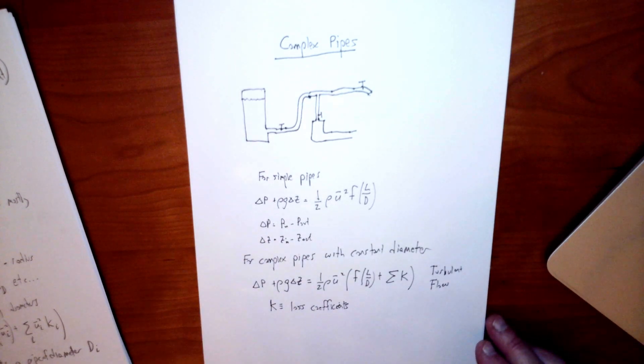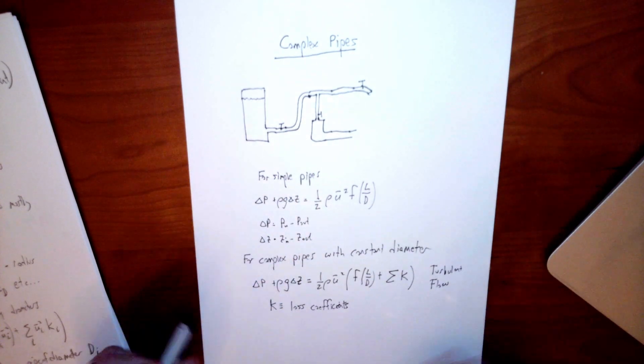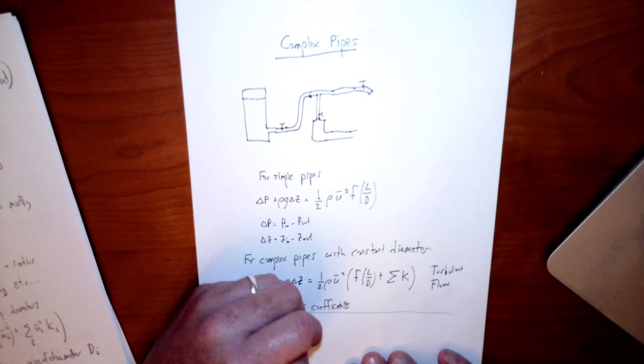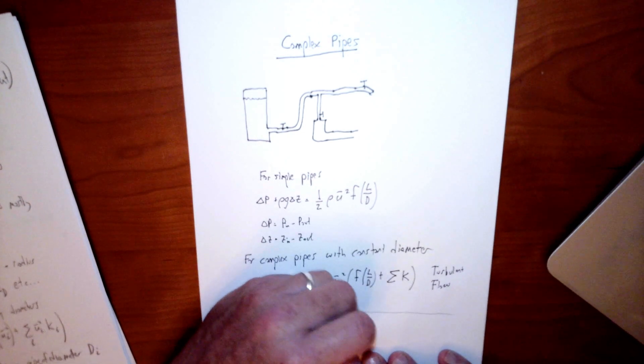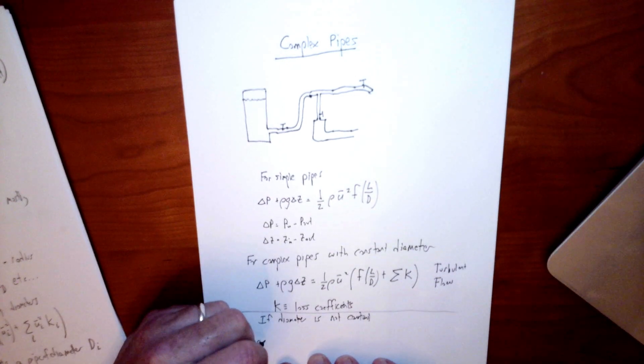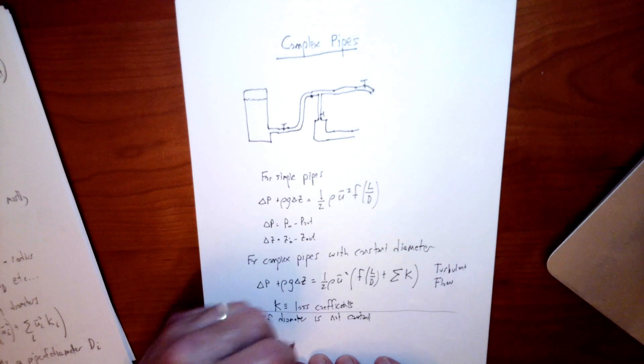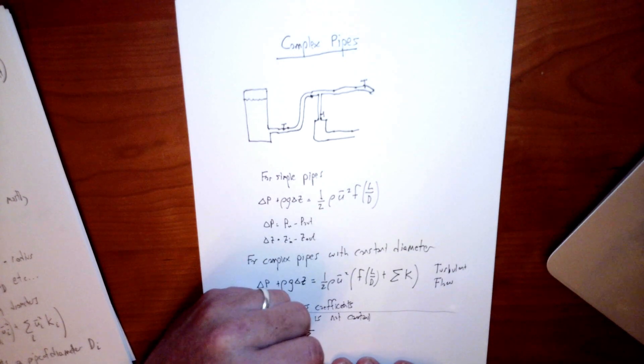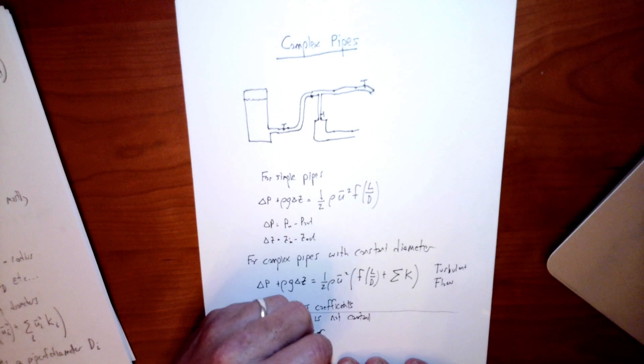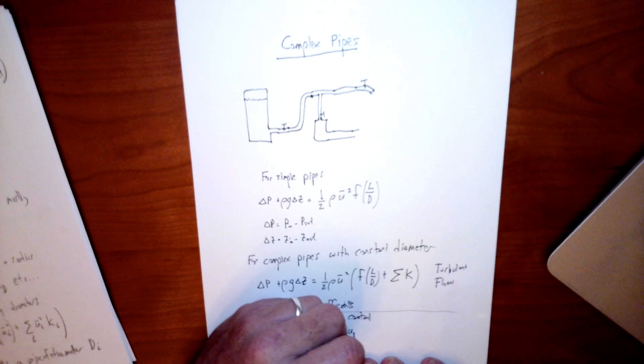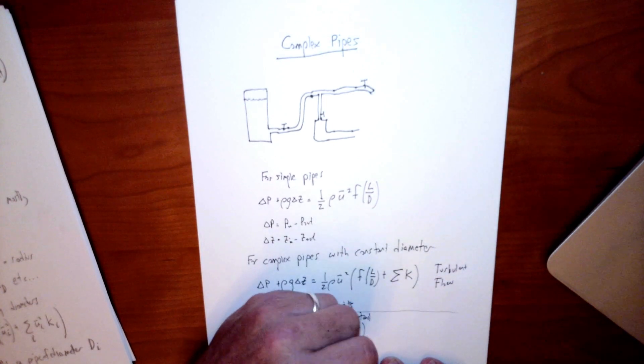All right, so what else do we have? Well, what if we do have varying diameters? We have varying diameters there, so let's take a look at that. So if the diameter does vary, or is not constant, then we need a different formula. And so that formula looks like this. Same left-hand side, delta P plus rho g delta z, same definition of delta P and delta z. But now we have to account for the fact that there could be different regions of the pipe that have different diameters. And if they're gonna have different diameters, they're also gonna have different velocities, right? Because we're gonna have mass conservation, assuming it's incompressible flow, as all the flows we've been studying in this class are.